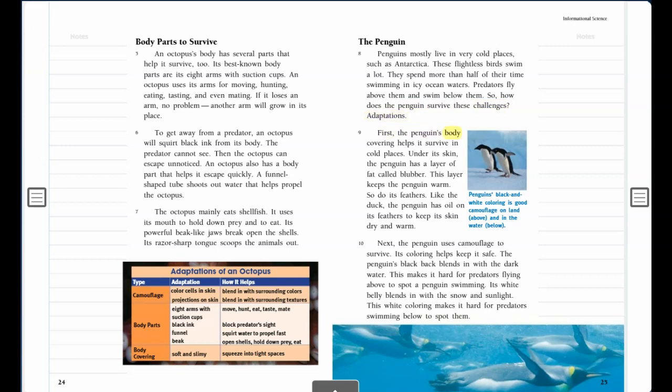First, the penguin's body covering helps it survive in cold places. Under its skin, the penguin has a layer of fat called blubber. This layer keeps the penguin warm. So do its feathers. Like the duck, the penguin has oil on its feathers to keep its skin dry and warm.